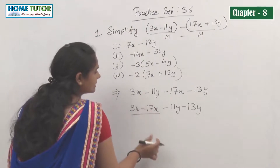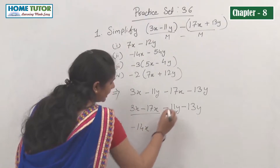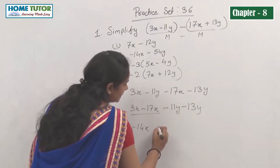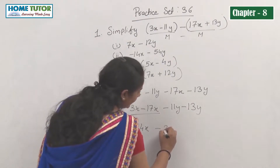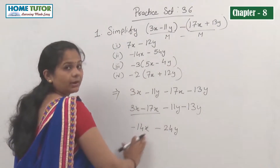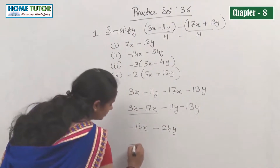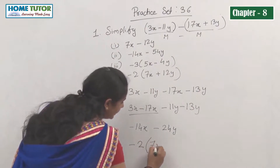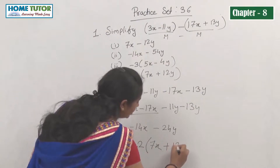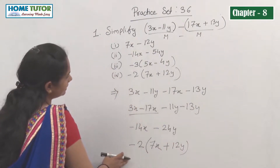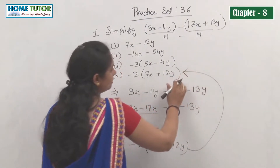3 minus 17 gives minus 14x. For the y terms, minus minus becomes plus, and the sign of the bigger number is minus, so we add to get minus 24y. So we have minus 14x minus 24y. We take out common factor minus 2 to get minus 2(7x plus 12y). Let's match the answer — that is option number 4.